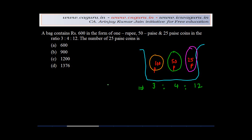Now this ratio is given in terms of numbers. The number of 25 paise coin, which is this, is how many?